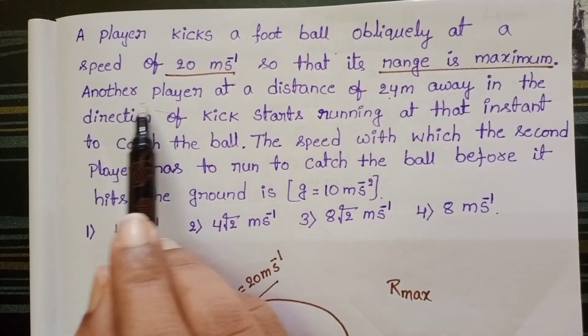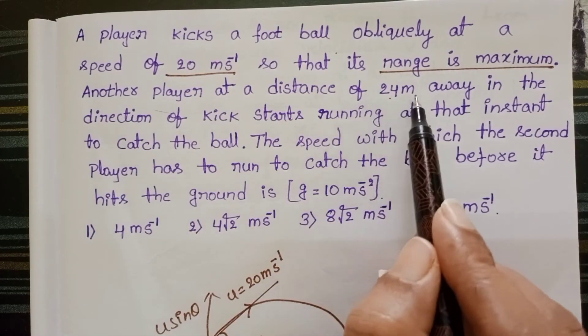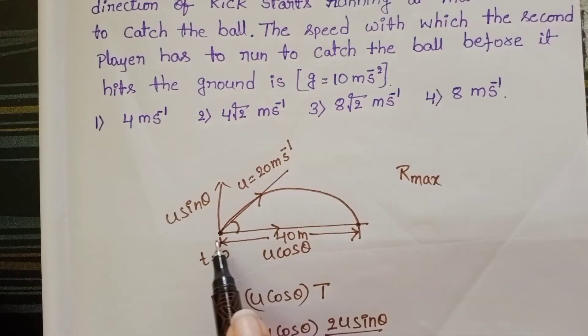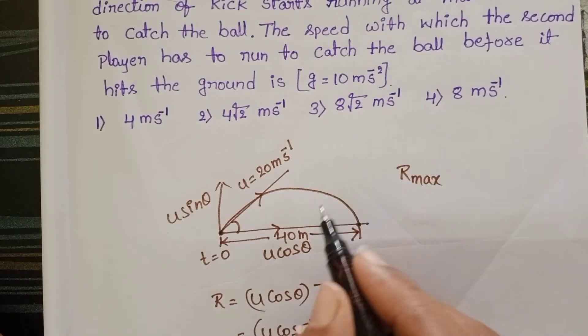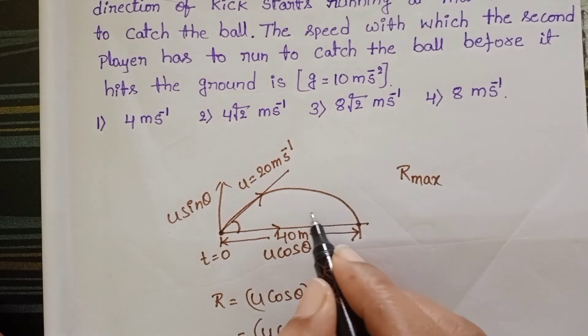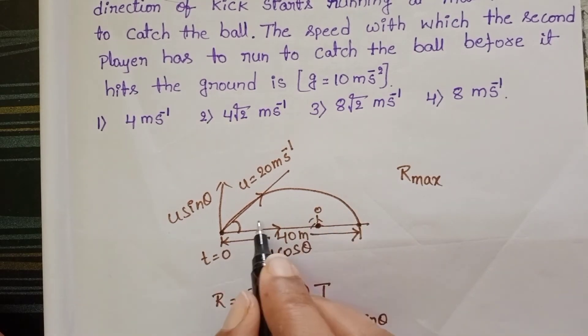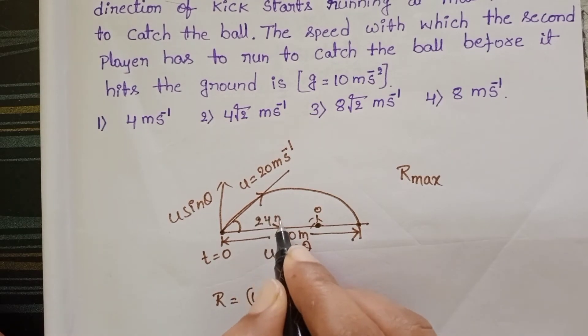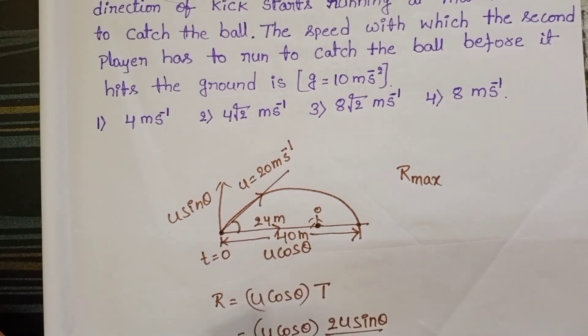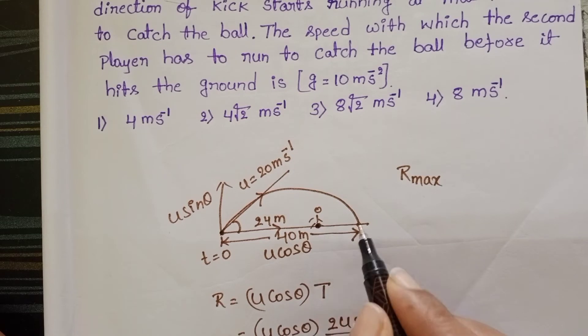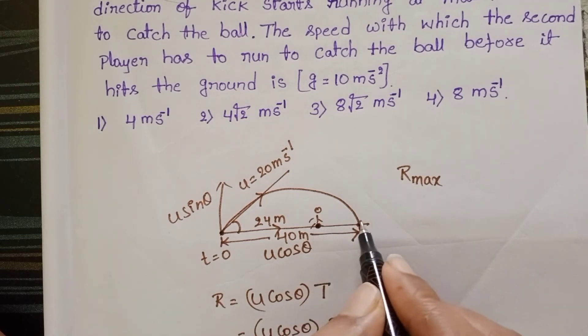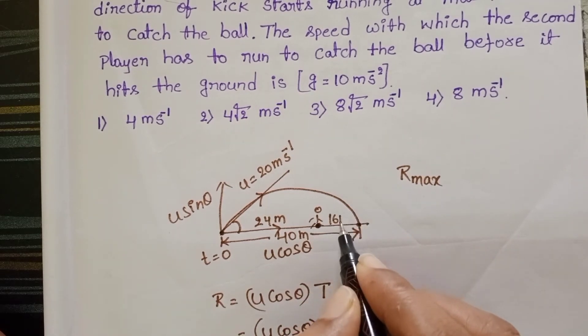Given question another player at a distance of 24 meters range is 40 meters. Another player is at the position and this is 24 meters from the kick. And from this point to final position this distance is 16 meters.